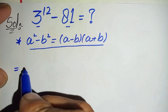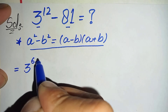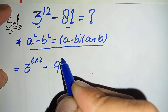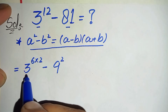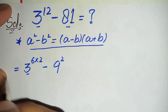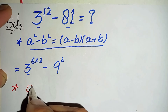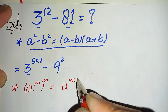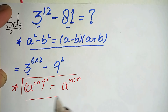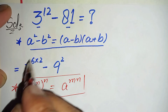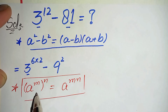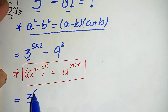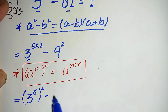So next it will become 3 to power 12 — we factorize 12 as 6 times 2 — minus 81, which we write as 9 times 9, that is 9 squared. We use the exponential property: a raised to power m, raised to power n, can be written as a raised to power m times n. Applying this property, it becomes 3 raised to power 6, whole squared, minus 9 squared.